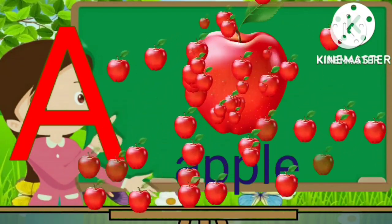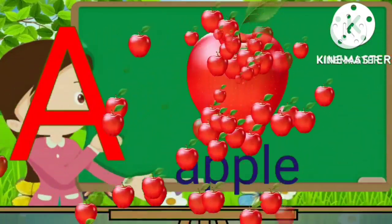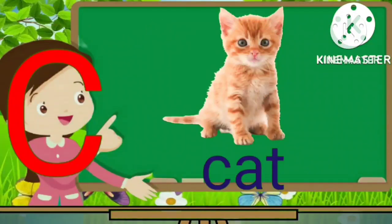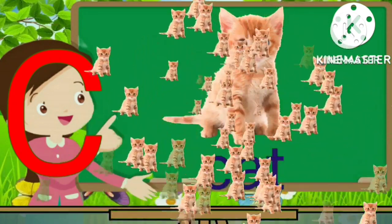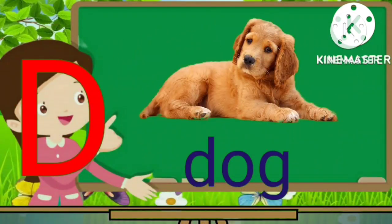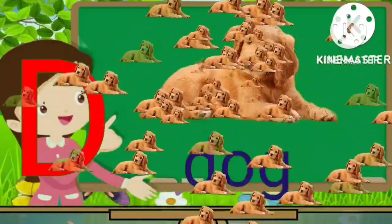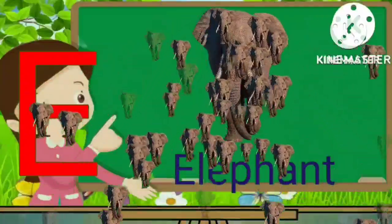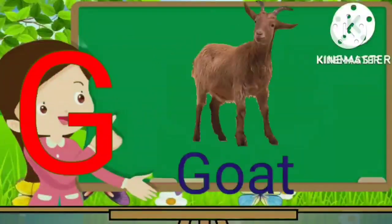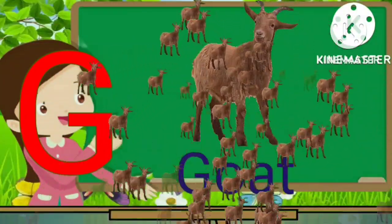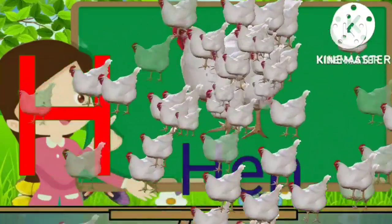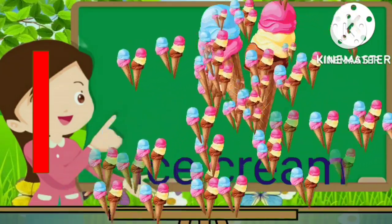A for apple. B for ball. C for cat. D for dog. E for elephant. F for face. G for goat. H for hen. I for ice cream.